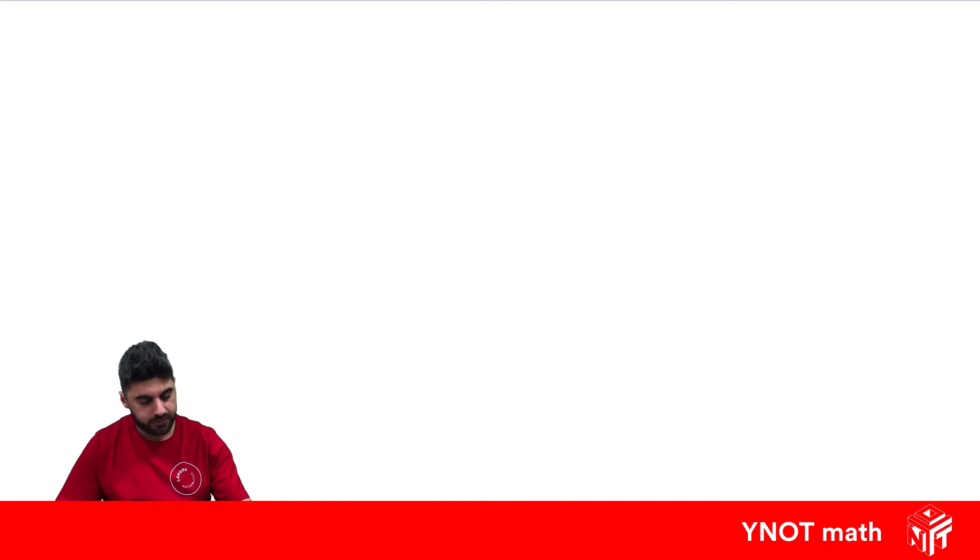So if we have root 3 all squared, that's just simply going to equal 3. If we have 3 squared square rooted, it also equals 3. You can think about them cancelling out with their opposite operations. Root and squared is opposite, so we're left with just 3. And squared and root is also opposite, so we're left with just 3.